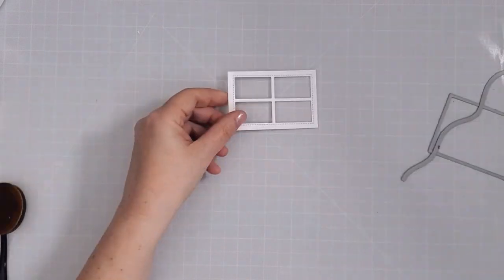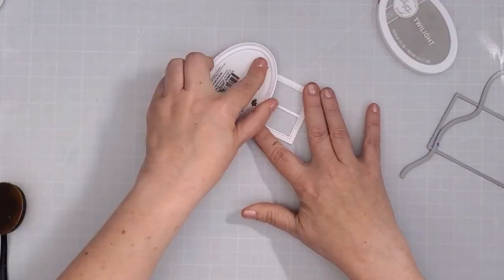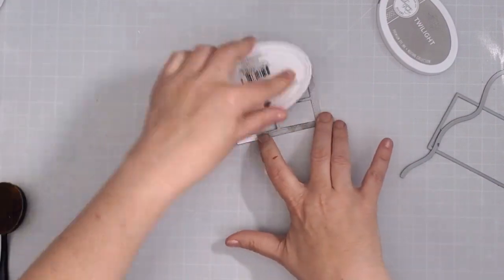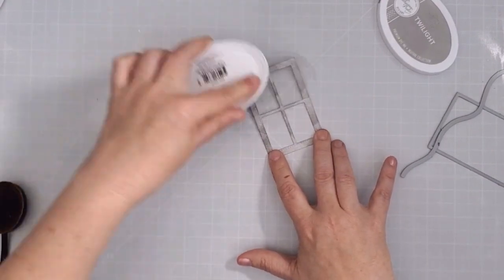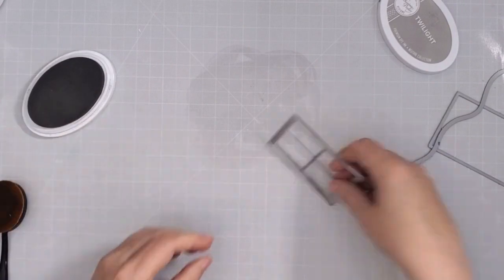To give some color to the window frame I used Twilight ink direct to paper which just means I pounced it over top until it was covered. This ink pad is a little dry so I set it aside to be re-inked after I am done.